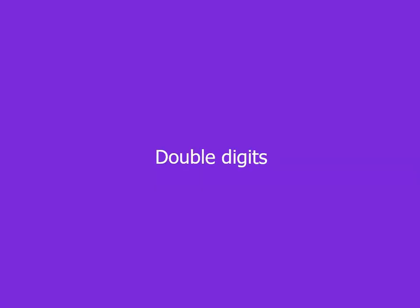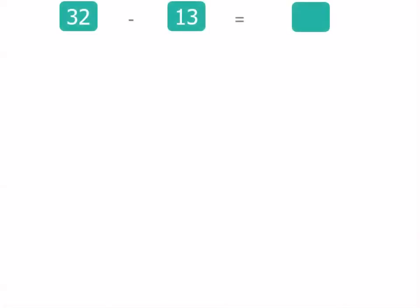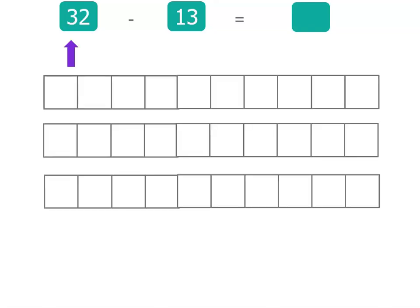Now we could have double digits as well, and even though there's more than one way to do these, I'm going to show you the main way we do it. If we have 32 and we're taking away 13, let's make a model again.